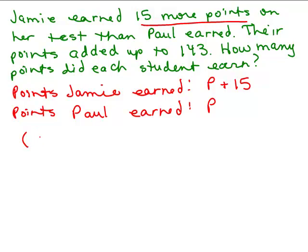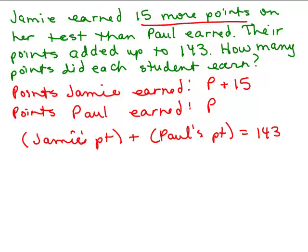We know that altogether their points added up to 143. So I'm going to write this: Jamie's points plus Paul's points, we know that's going to add up to 143. This is the way you might think about it, and so we could put in how many did Jamie earn? Well, p plus 15 is what Jamie earned, plus how many Paul earned, that was p, and that's going to equal 143.